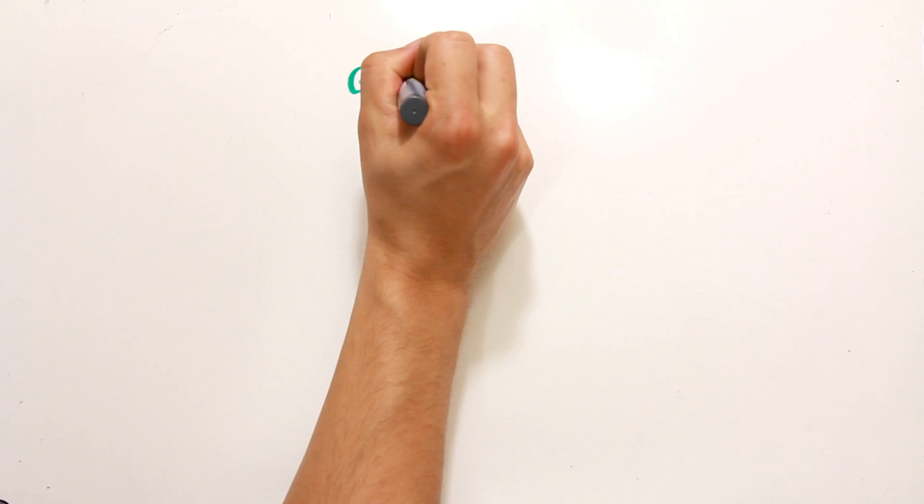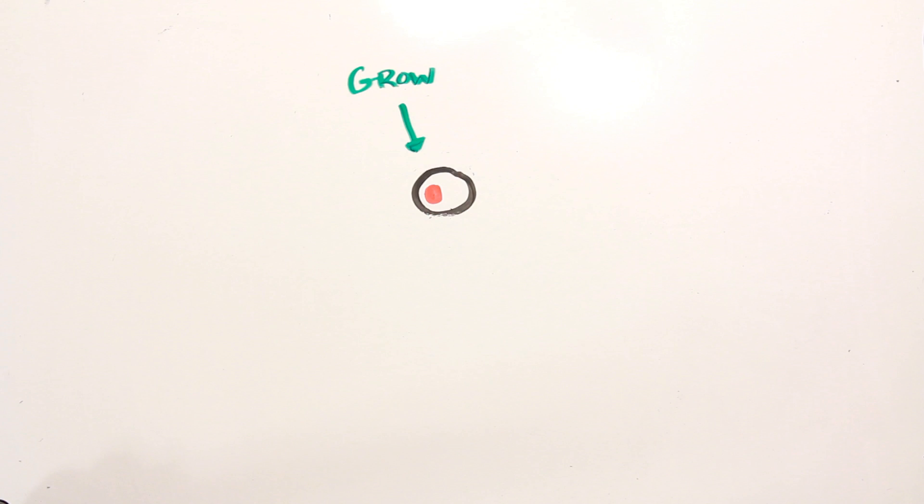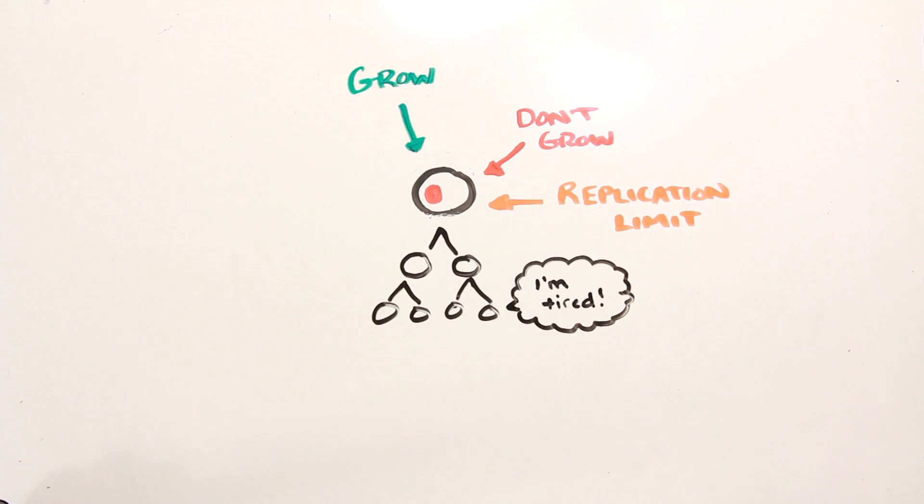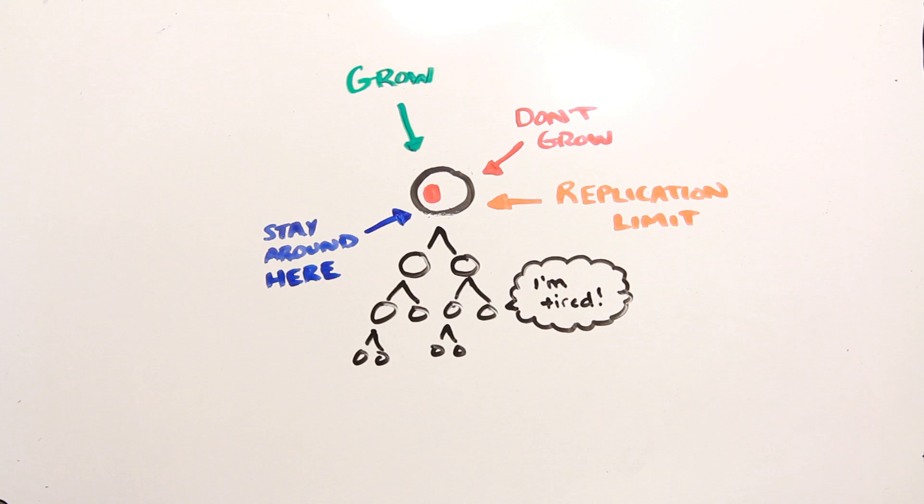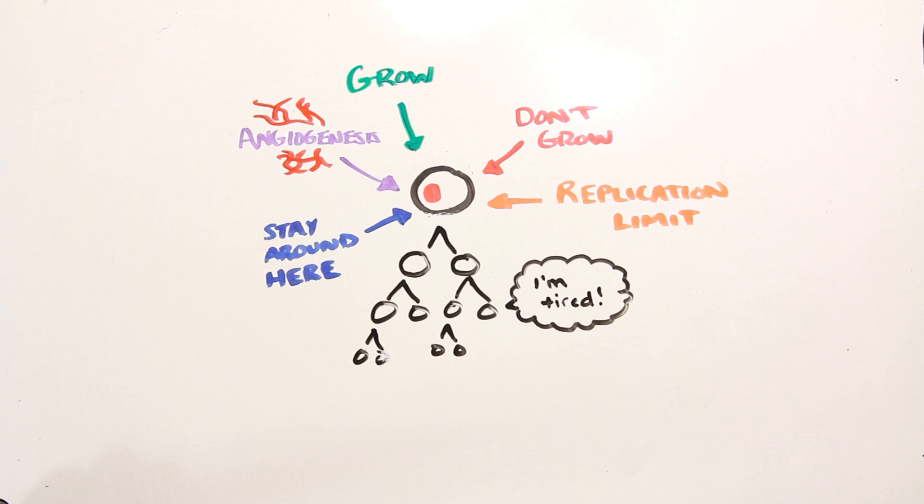For example, cells not only receive growth signals, they actually receive anti-growth signals to tell them when to stop growing altogether. On top of this, cells actually have a limited replicative capacity, meaning the more they replicate, the less chance they have to do it again. Finally, cells are generally localized to an area in the body and require angiogenesis, or blood vessel creation, to sustain their life and bring them nutrients.